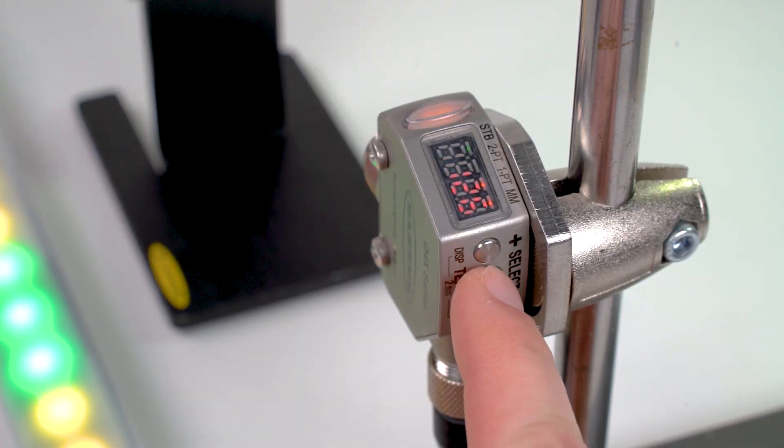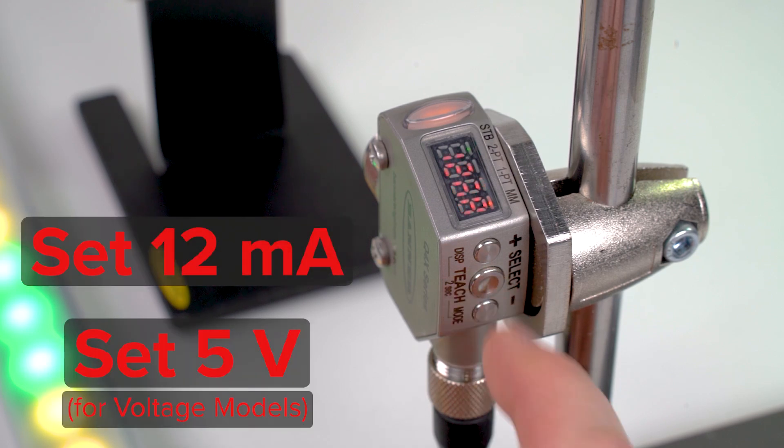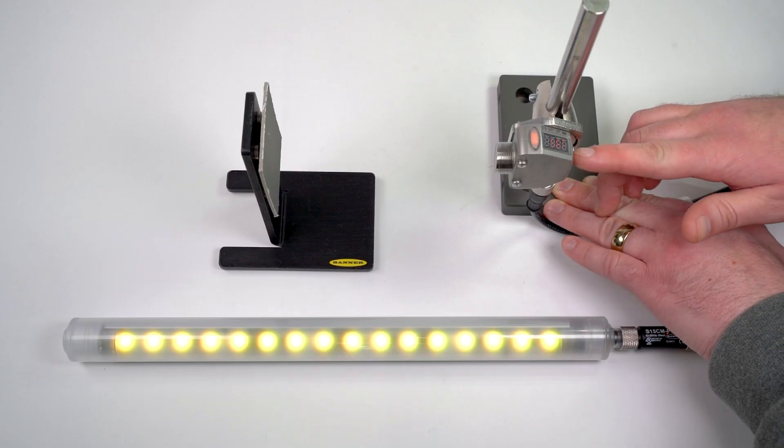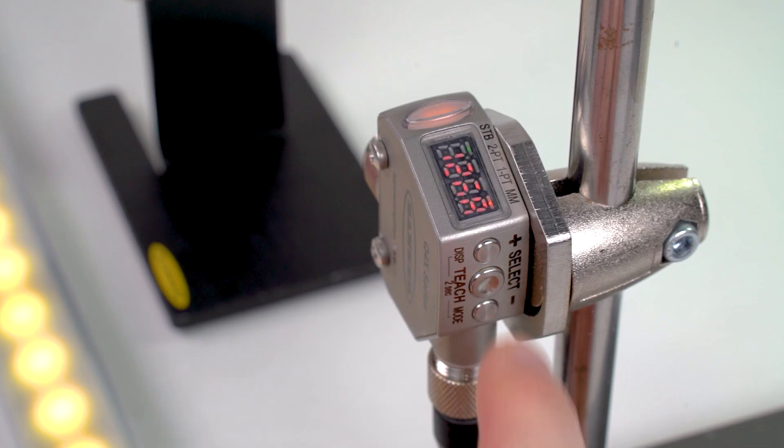press and hold the teach button for two or more seconds until the display shows set 12 milliamps. Present the midpoint distance and press the select button to set that distance.